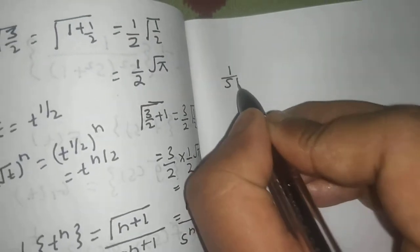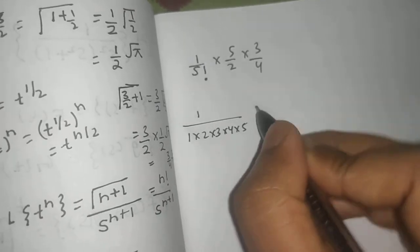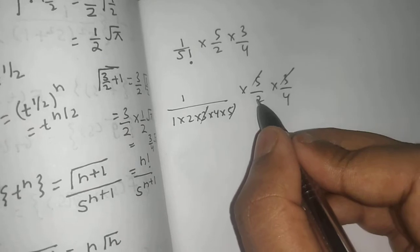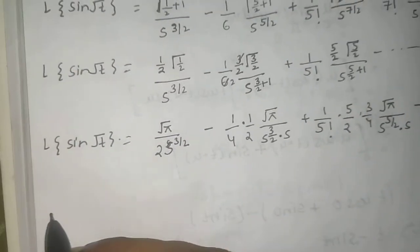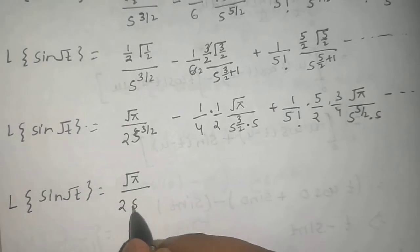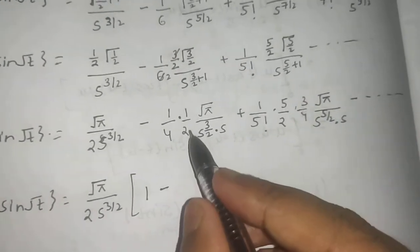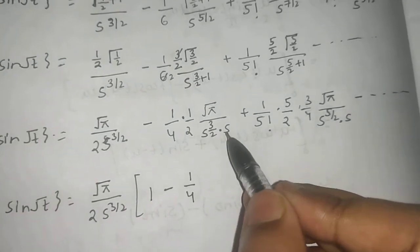Simplifying the third term: 1/5! × 5/2 × 3/4 = 1/(1·2·3·4·5) × 5/2 × 3/4. Cancelling 5 and 3 leaves 1/64. So Laplace of sin(√t) equals √π/(2s^(3/2)) times the bracket: taking √π/(2s^(3/2)) common, the remaining bracket starts with 1 minus 1/(4s)...